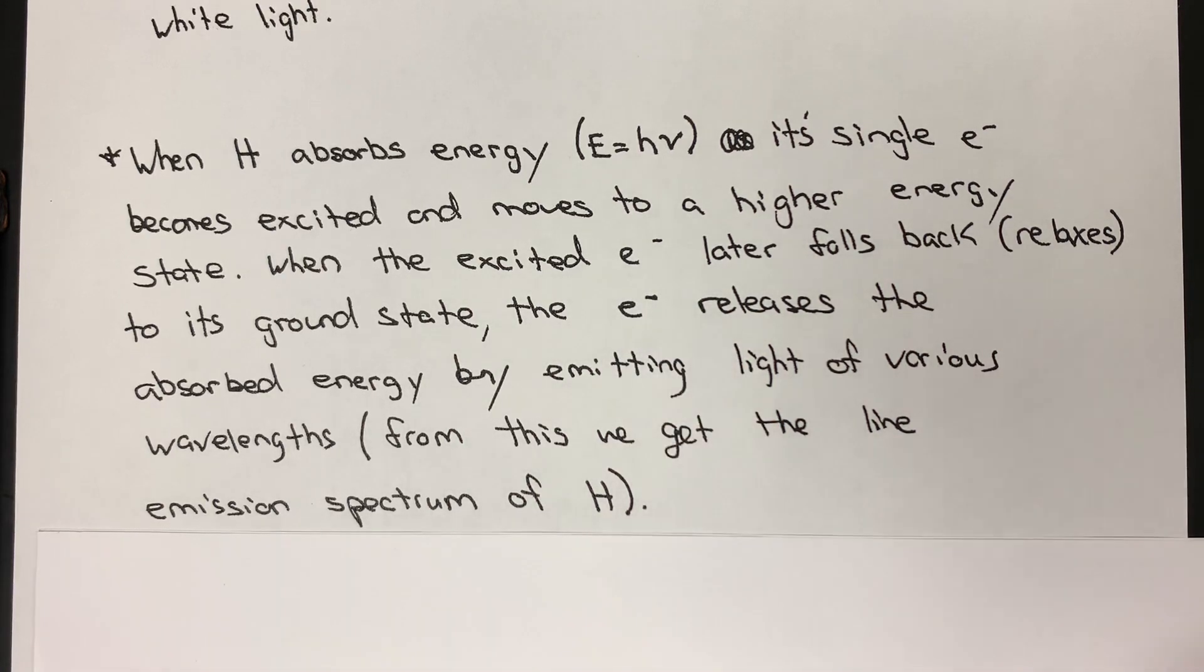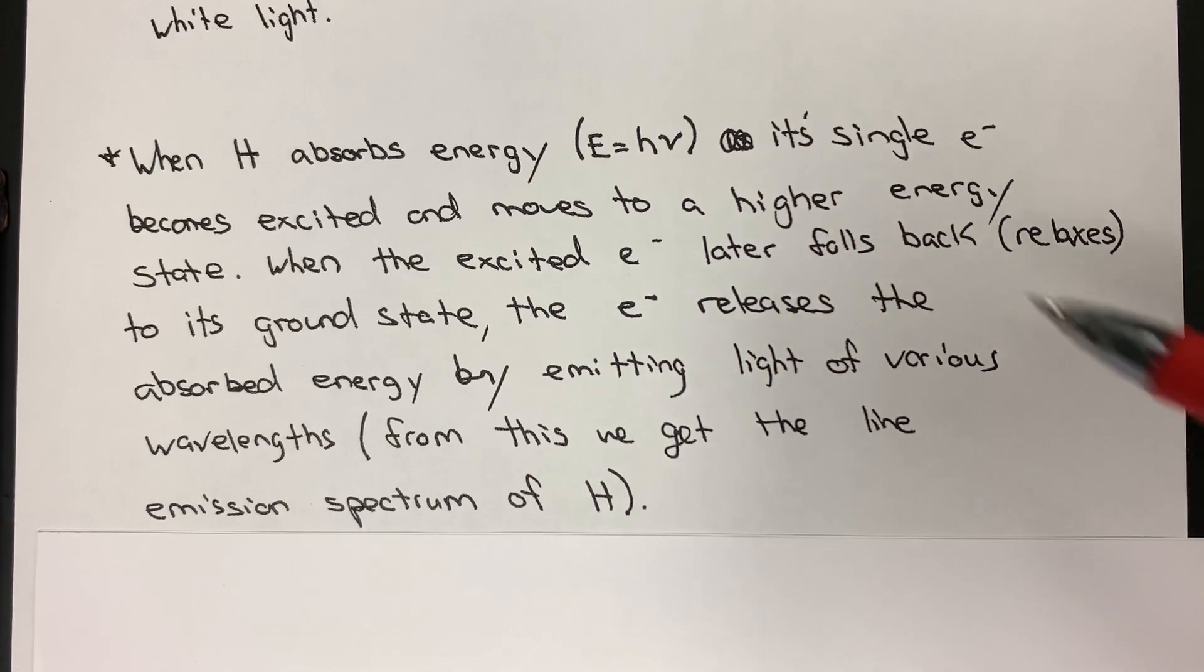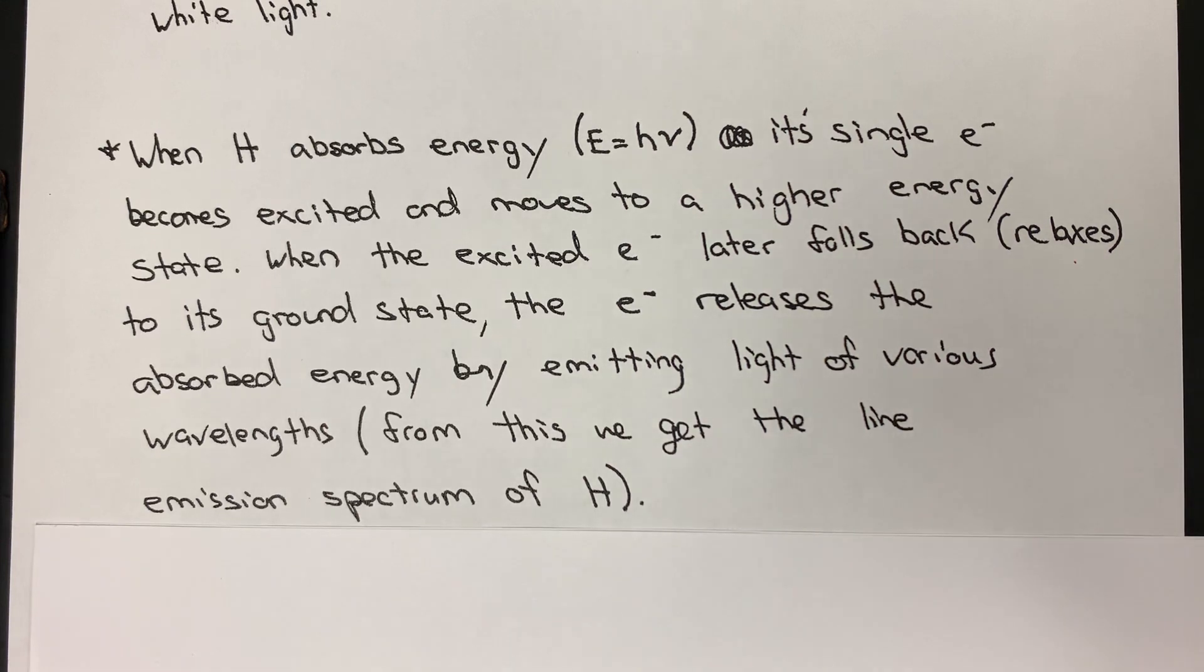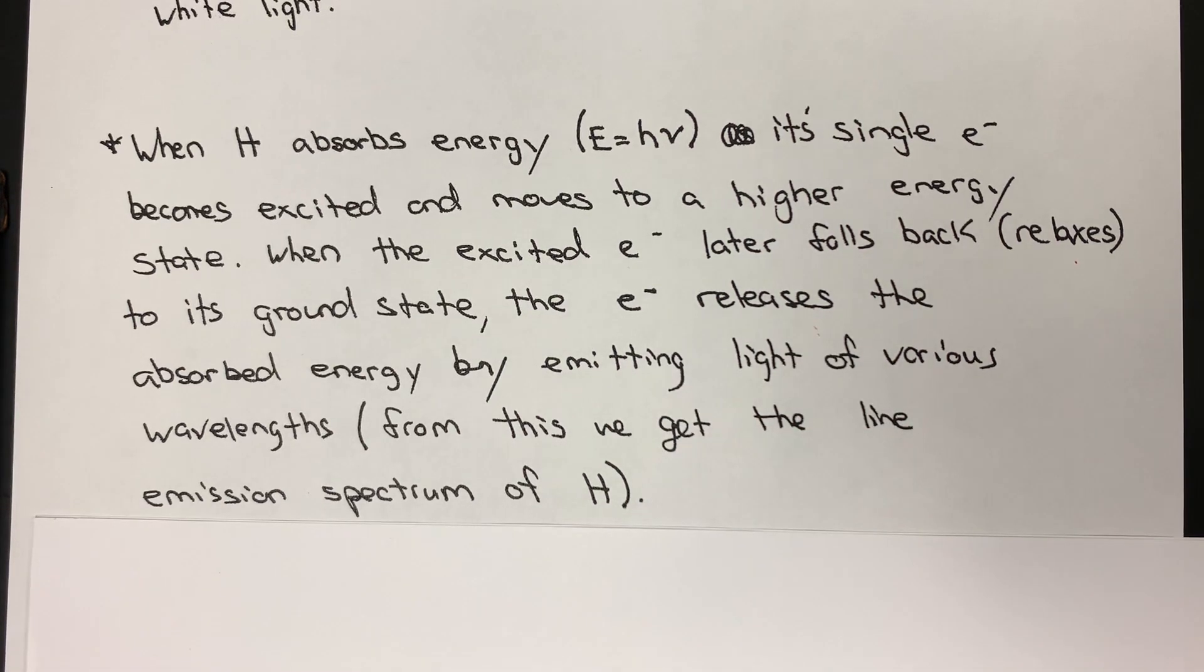At some point, that excited electron is going to fall back to its ground state. Instead of falling back, we could use the term relaxes back to its ground state. It's negative, the nucleus is positive. We can split that overall appearance of light by using some prism to see these component wavelengths.